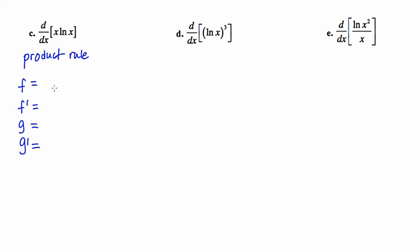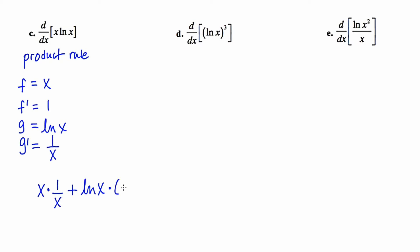My first function is x and its derivative is 1. My second function is the natural log of x, and its derivative — placing the argument x in the denominator and its derivative 1 in the numerator — is 1 over x. Now implementing the product rule: it's going to be the first times the derivative of the second, plus the second times the derivative of the first. The x and the x cancel out, and multiplying by 1 doesn't impact anything, so in the end we're left with 1 plus the natural log of x.